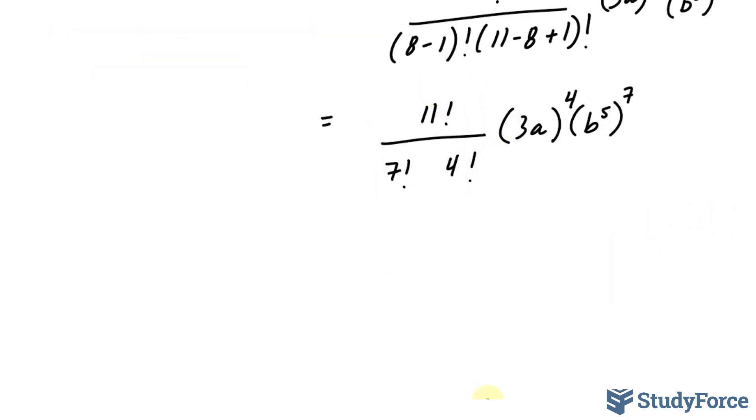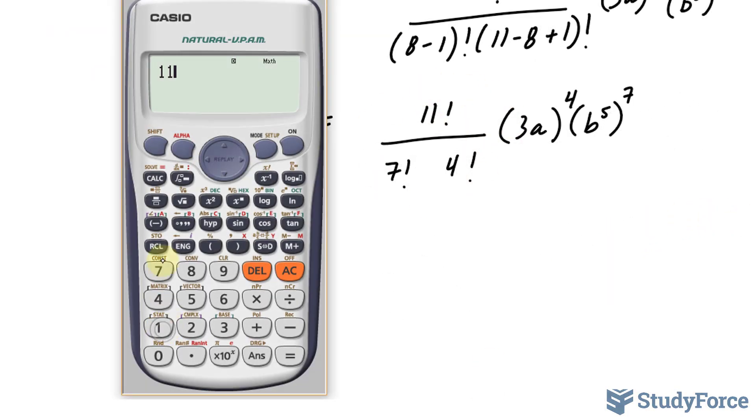To evaluate this part, I'll use my calculator. 11 factorial divided by 7 factorial times 4 factorial. This gives me 330.